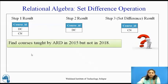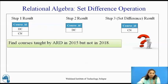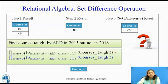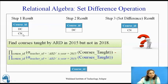Now consider the reverse: find courses taught by ARD in 2015 but not in 2018. We reverse the sequence — take courses taught in 2015 and subtract courses taught in 2018. Courses taught in 2015 is DC; courses taught in 2018 are DC and CN. There are no courses taught in 2015 but not in 2018, so the result is null.